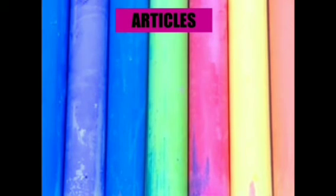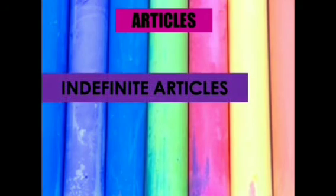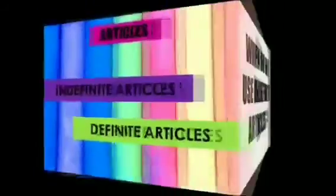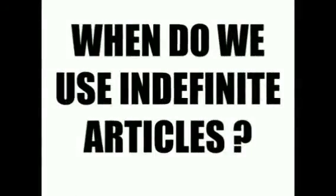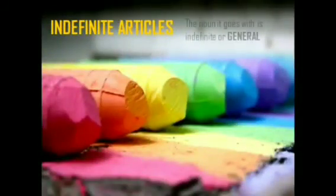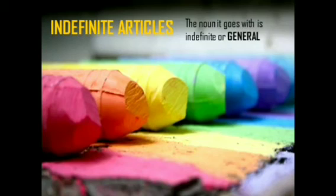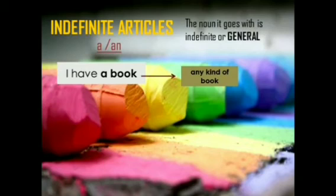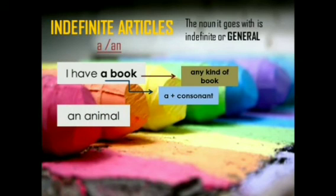We have indefinite articles and definite articles. Indefinite articles are 'a' and 'an' — the noun it goes with is indefinite or general. 'I have a book' — any kind of book. 'A' always comes before a consonant sound and 'an' before a vowel sound. Exceptional cases: 'an hour' — we go by the sound, not the letter.